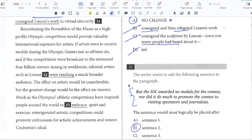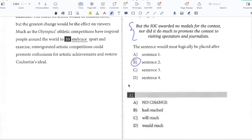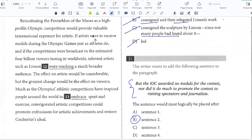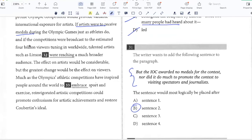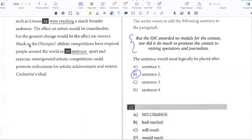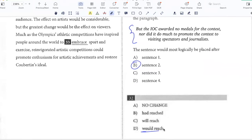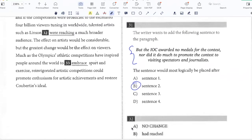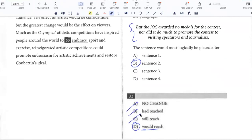Re-instituting the pentathlon of the muses as a high profile Olympic competition would provide valuable international exposure for artists. If artists were to receive medals during the Olympic games, just as athletes do, and if the competitions were broadcast to the estimated 4 billion viewers tuning in worldwide, talented artists such as Linson were reaching a much broader audience. So here I'm talking about what would happen if artists were able to receive medals, right? So this is something that is not happening currently, but if it were to happen, then talented artists would reach a much broader audience. So when you have a hypothetical, you say 'would.' If we were to re-institute the pentathlon, then talented artists would reach a larger audience. So 'were reaching,' 'had reached,' 'will reach' - none of those convey the hypothetical, so D.